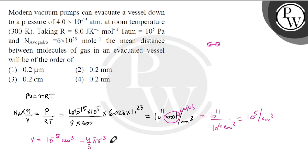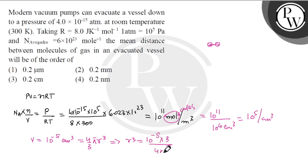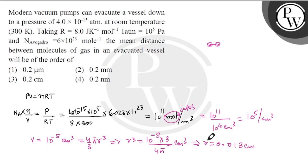This implies r³ = 10⁻⁵ × 3/(4π) centimeter cube. Solving for r, we get r = 0.013 centimeter. So that is the value of the radius — the mean distance between molecules comes out to approximately 0.013 centimeters.